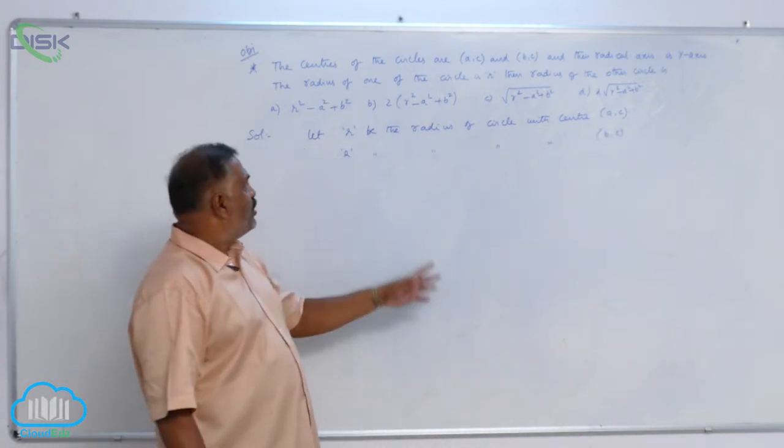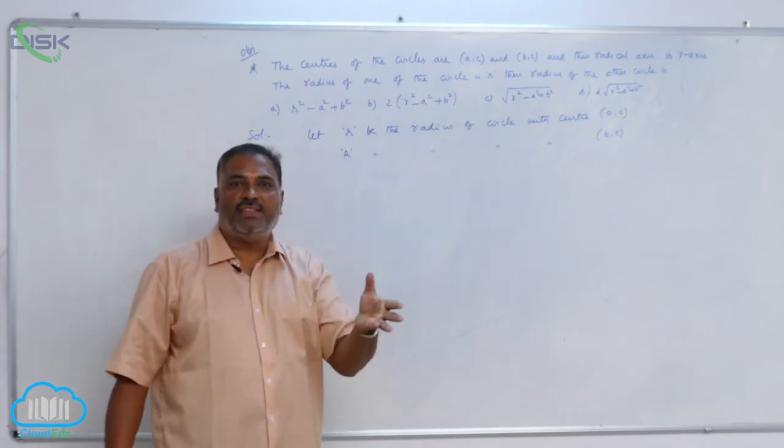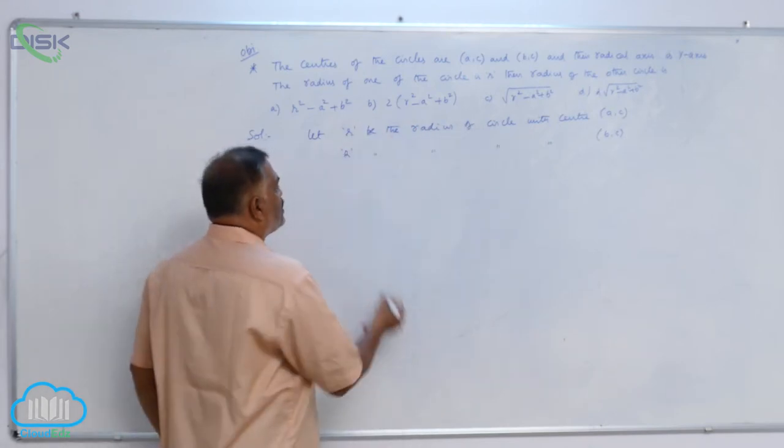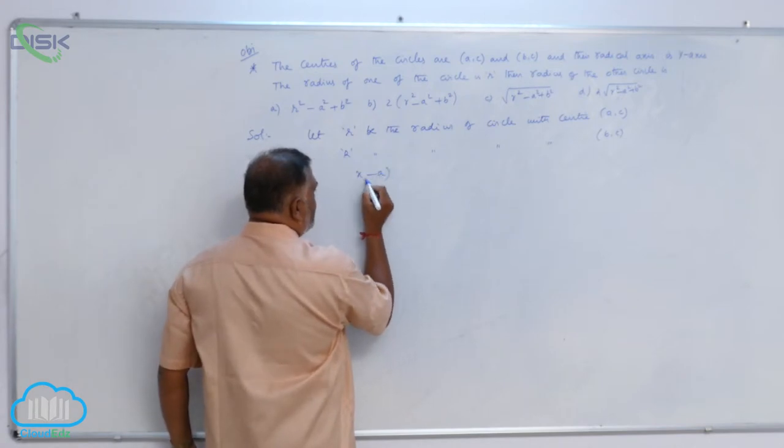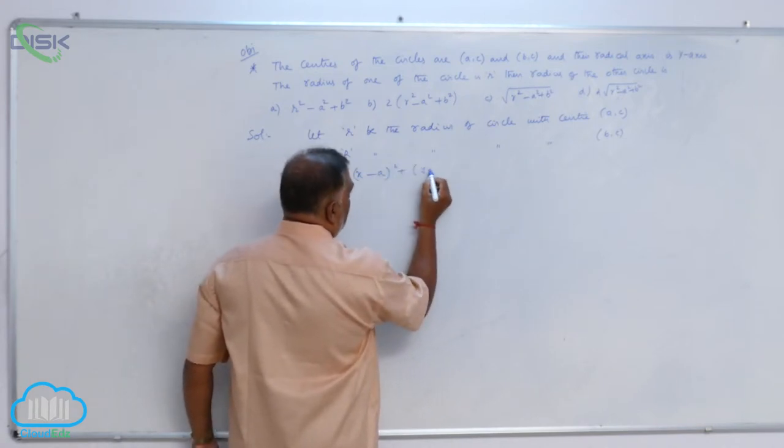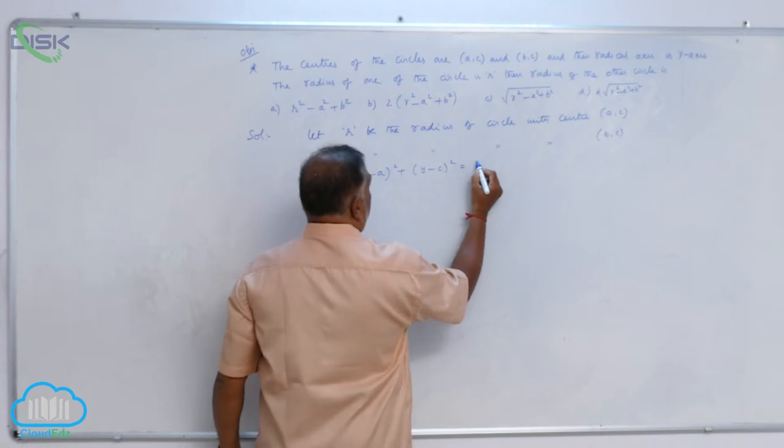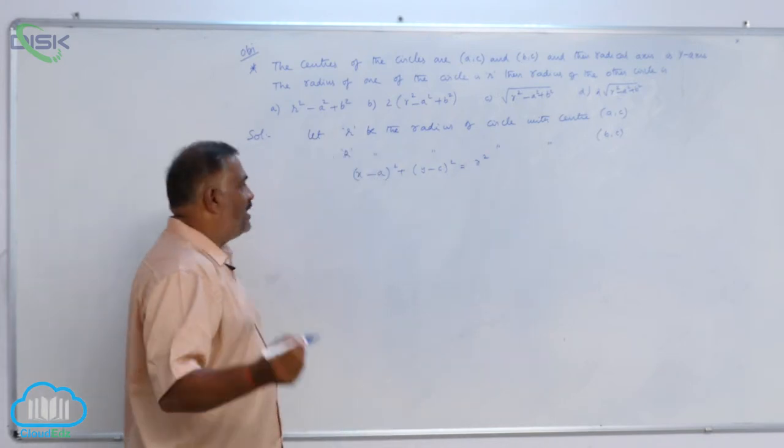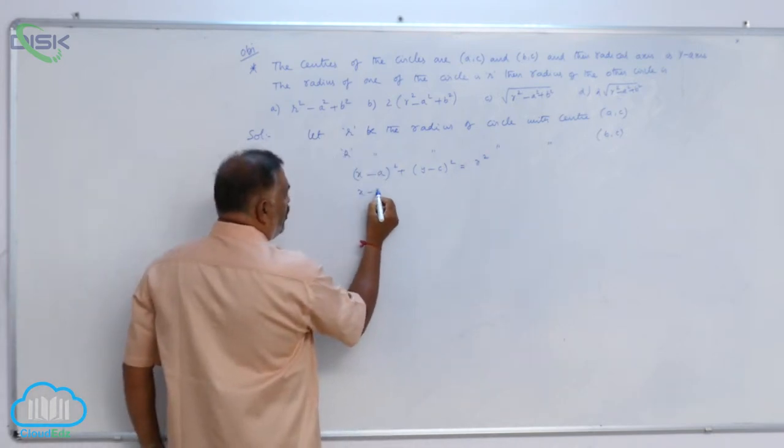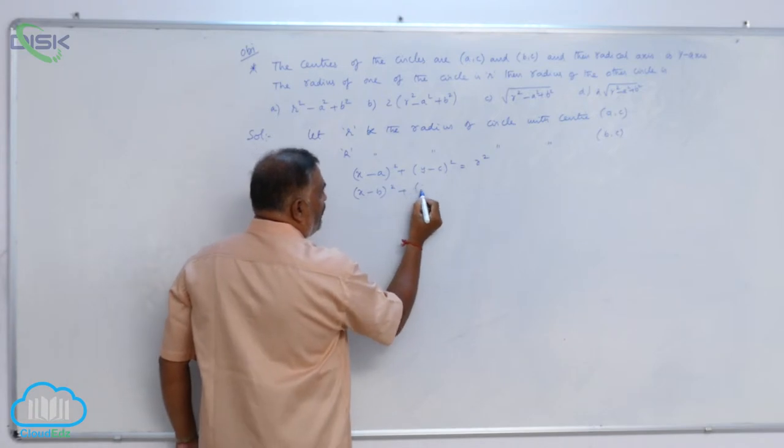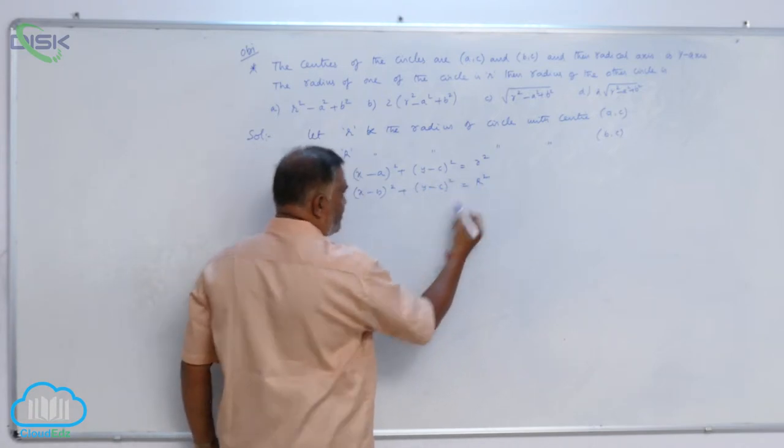Once you know the center and radius, you can write the equation of the circle. So, (x - a)² + (y - c)² = r² and (x - b)² + (y - c)² = R².